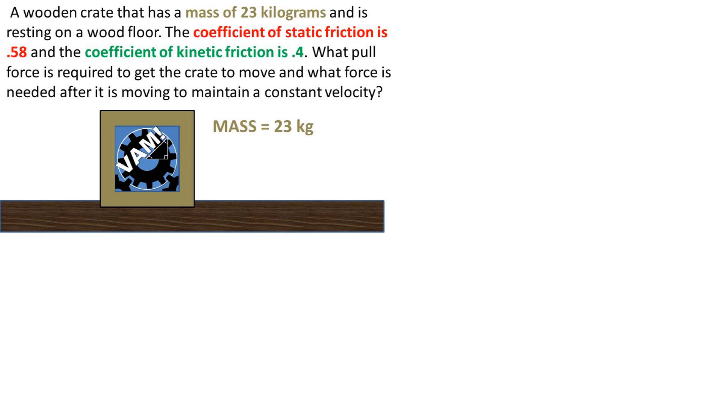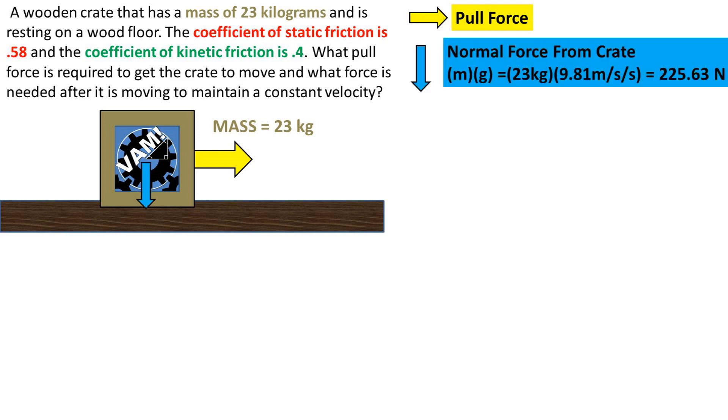Let's draw all of the force arrows in a free body diagram. First, we have the force that we will be pulling with, which will be marked with the yellow arrow. We then have the normal force from the crate, which is the mass times the acceleration due to gravity. This will be marked with the blue arrow. The floor will be pushing back with an equal and opposite force, the normal force from the floor, which is marked with the purple arrow.